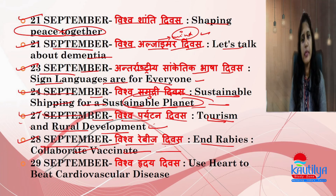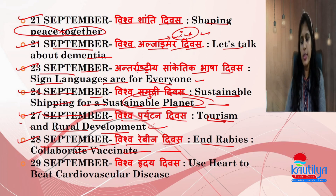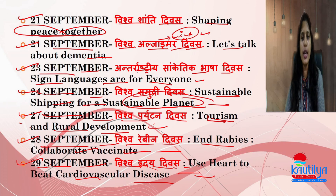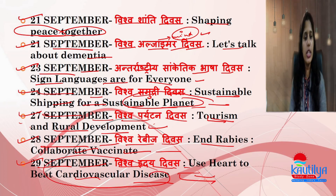28th September is World Rabies Day, related to vaccines against rabies. 29th September is World Heart Day. The theme is 'Use Heart to Beat Cardiovascular Disease,' meaning use your heart to fight heart-related diseases.